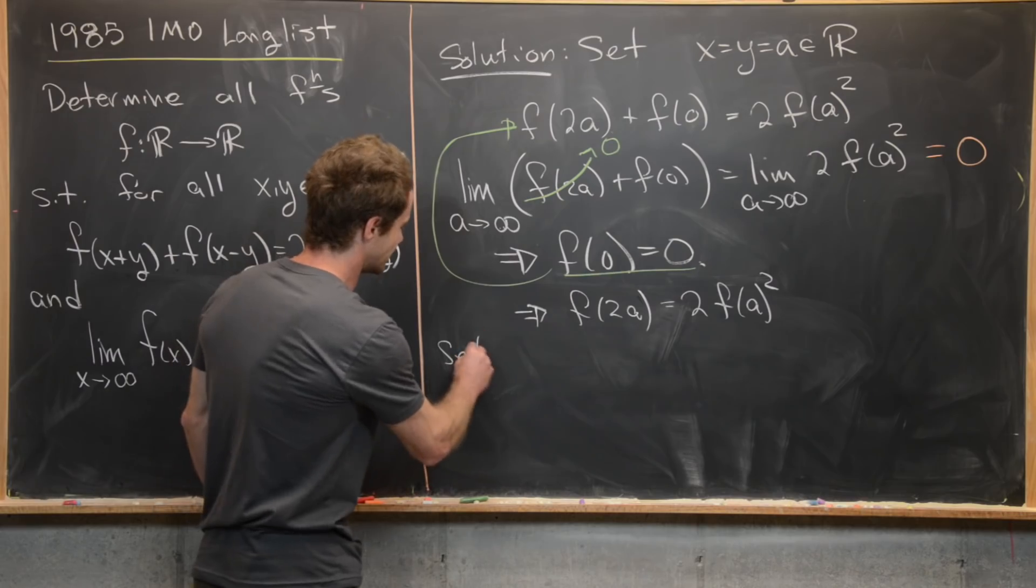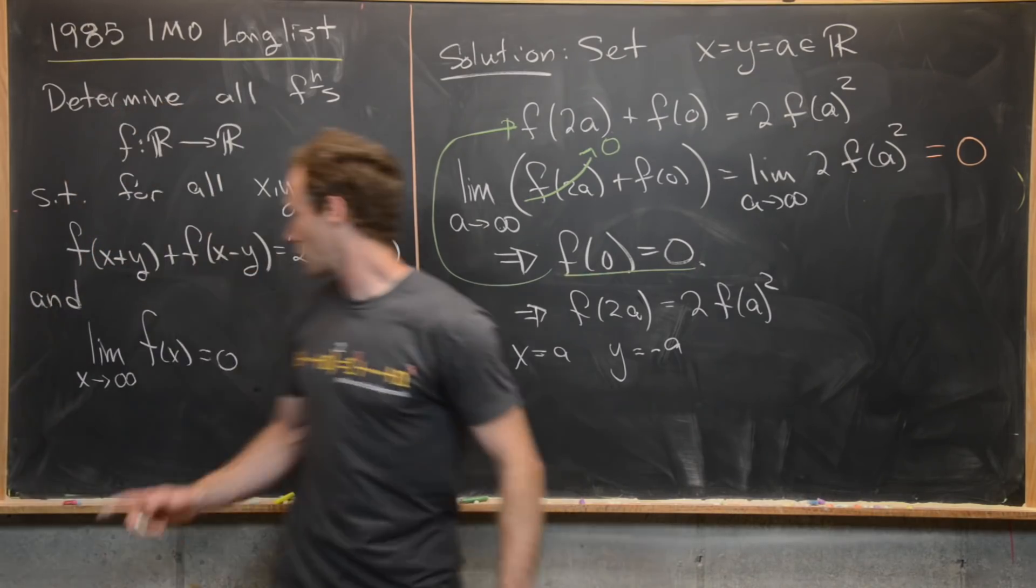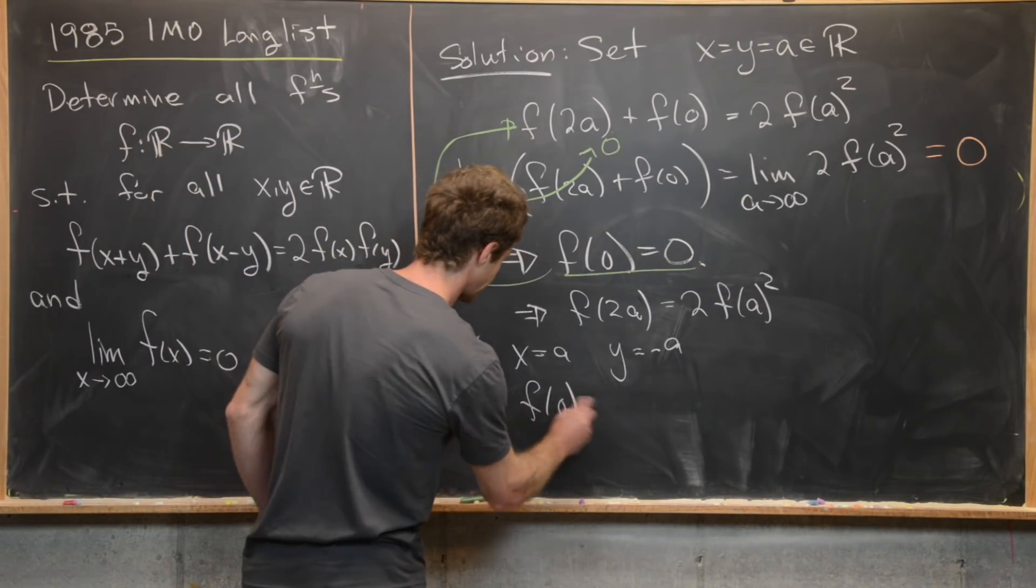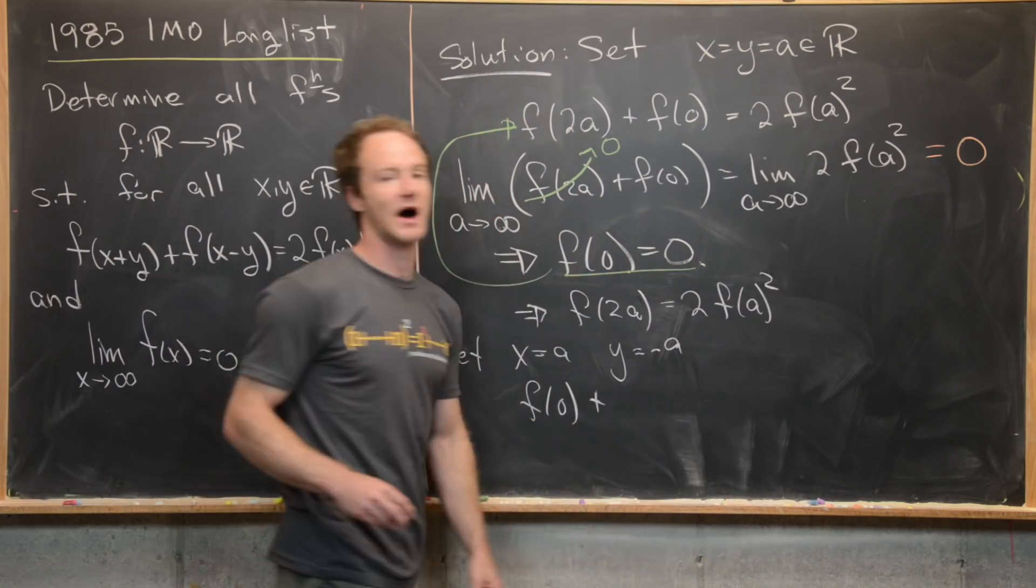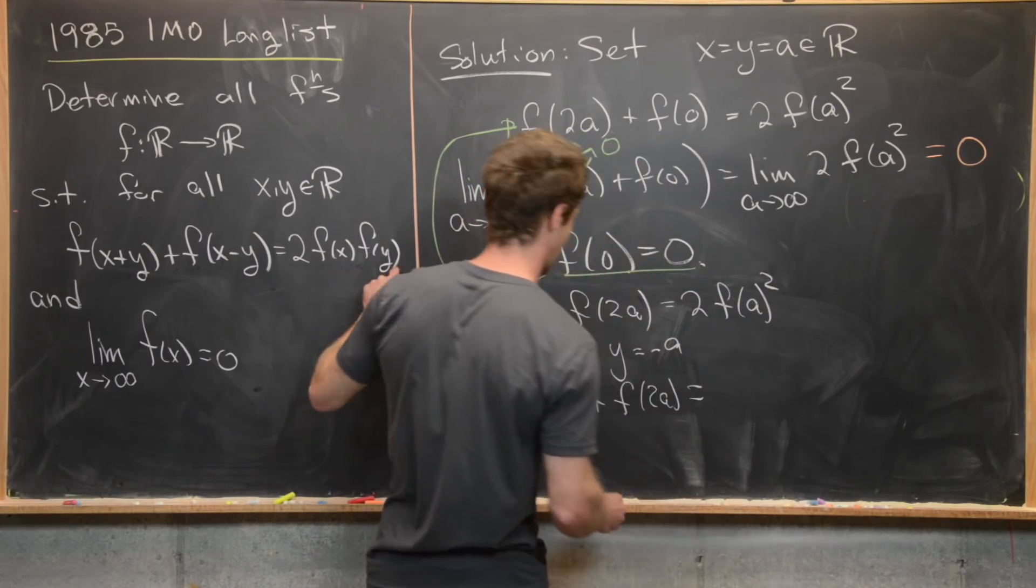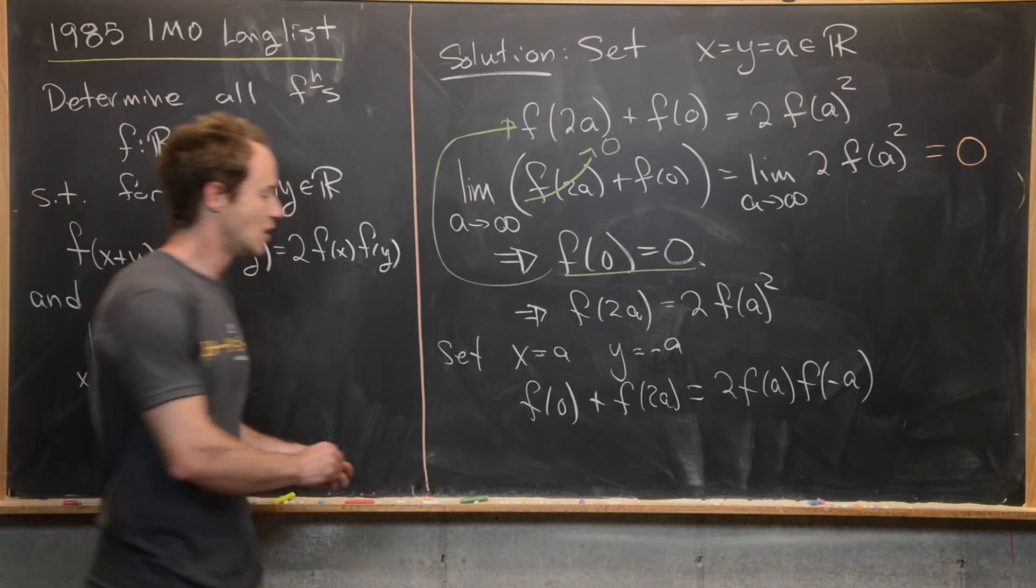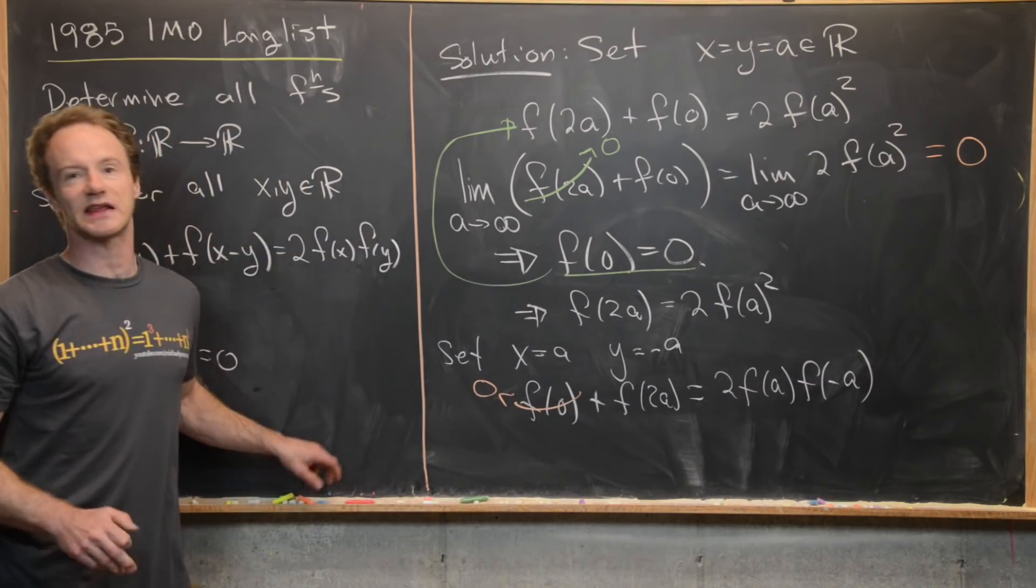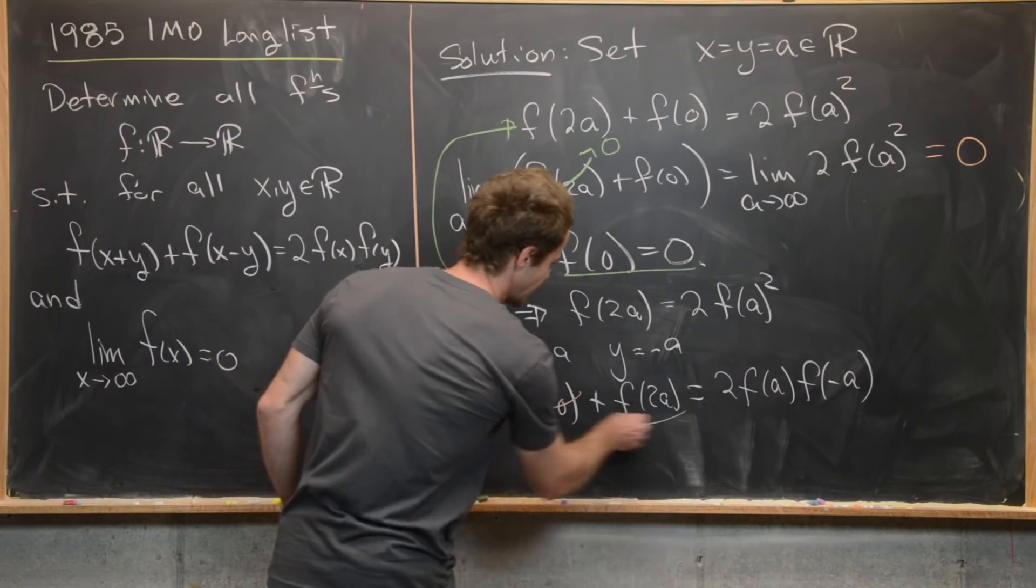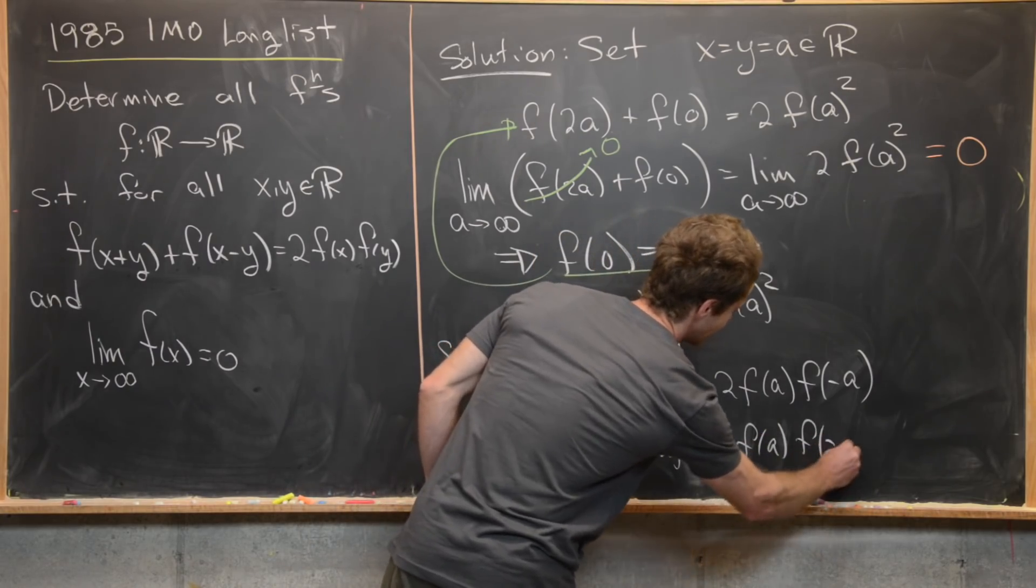For our next thing, we will set x equal to a and y equal to negative a. So let's see what we get for that. We'll have f(0) + f(2a) = 2f(a)f(-a). Now again, we know that f(0) is equal to zero, so we can cancel that out. And then we know f(2a) = 2f(a)², so we can replace that: 2f(a)² = 2f(a)f(-a).